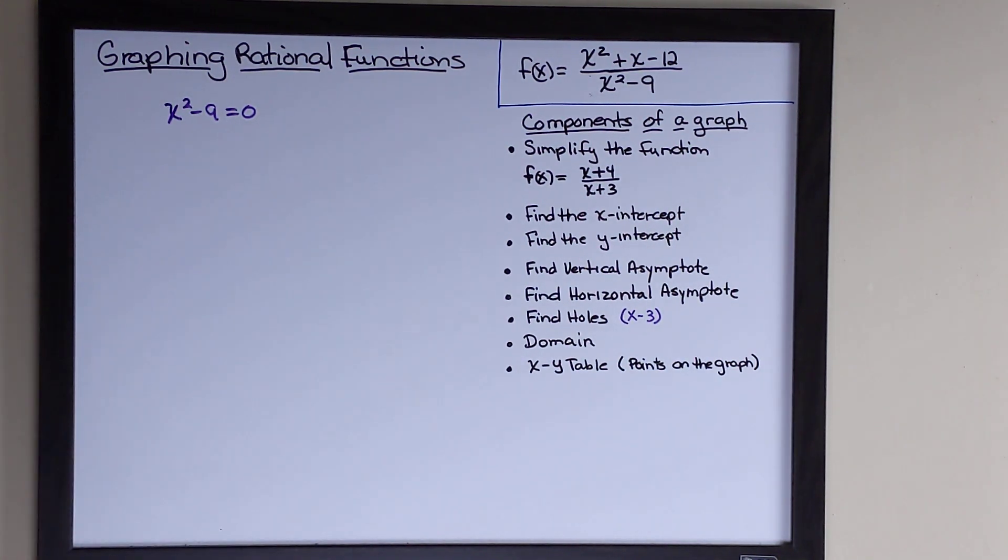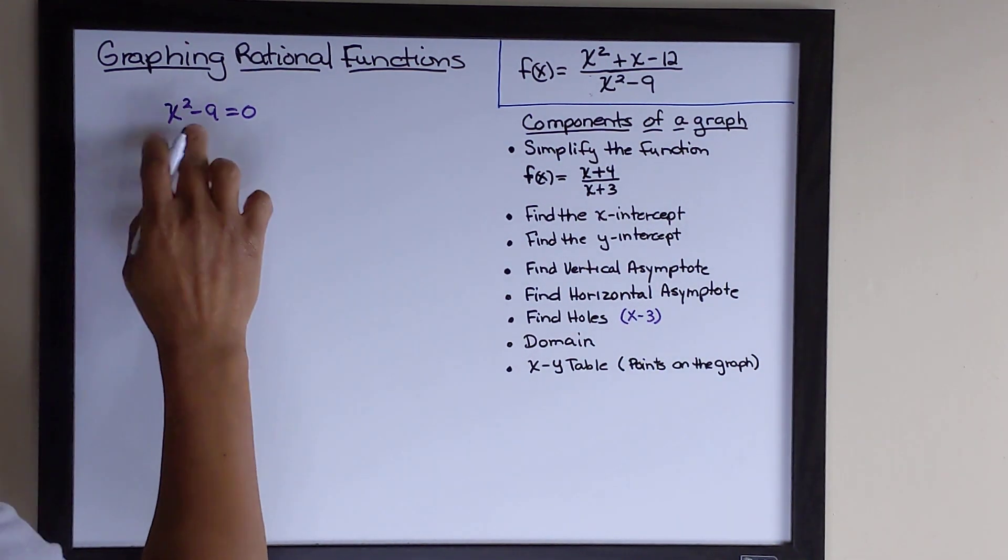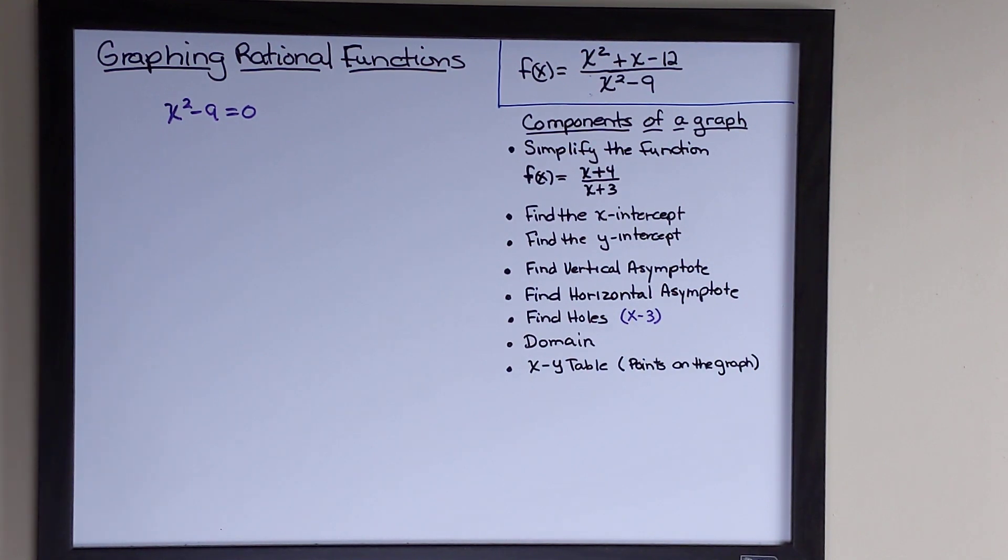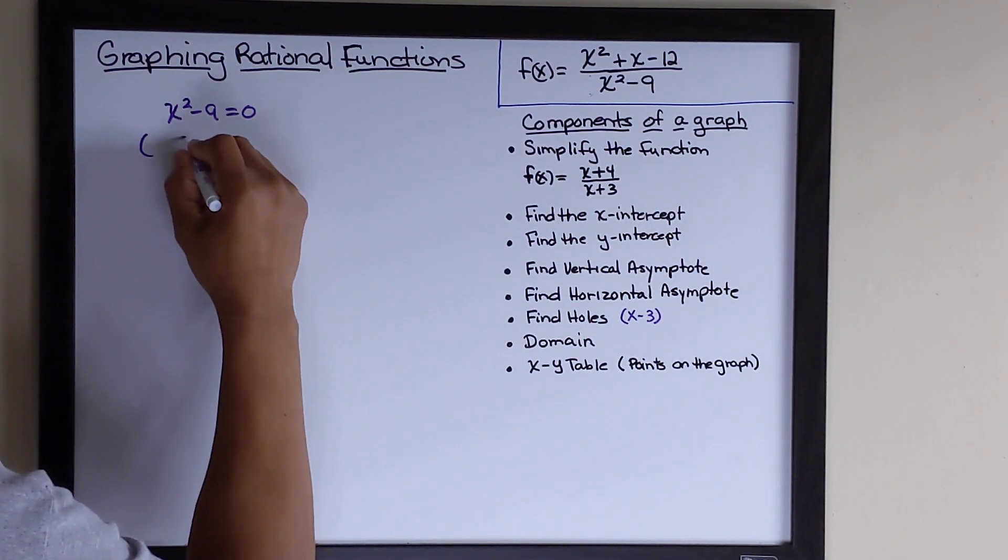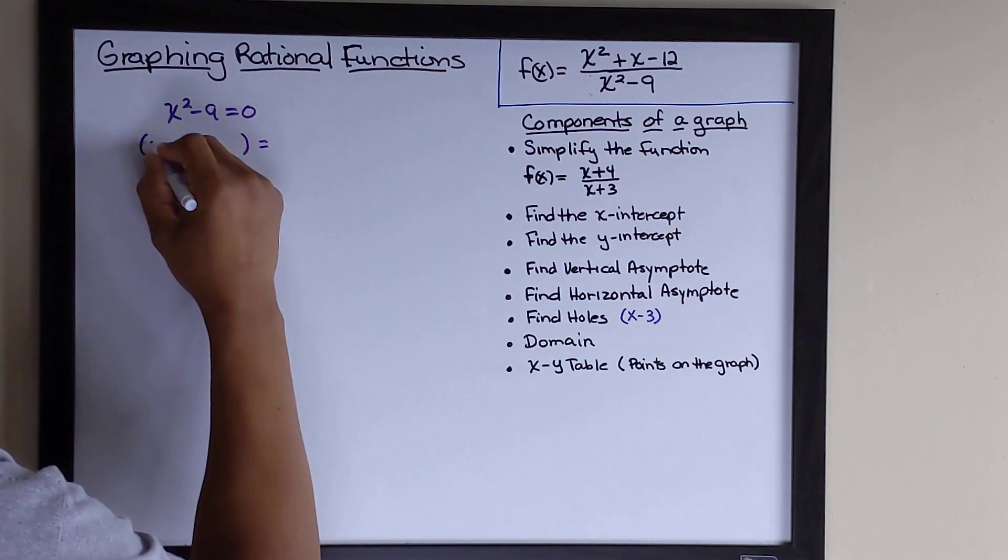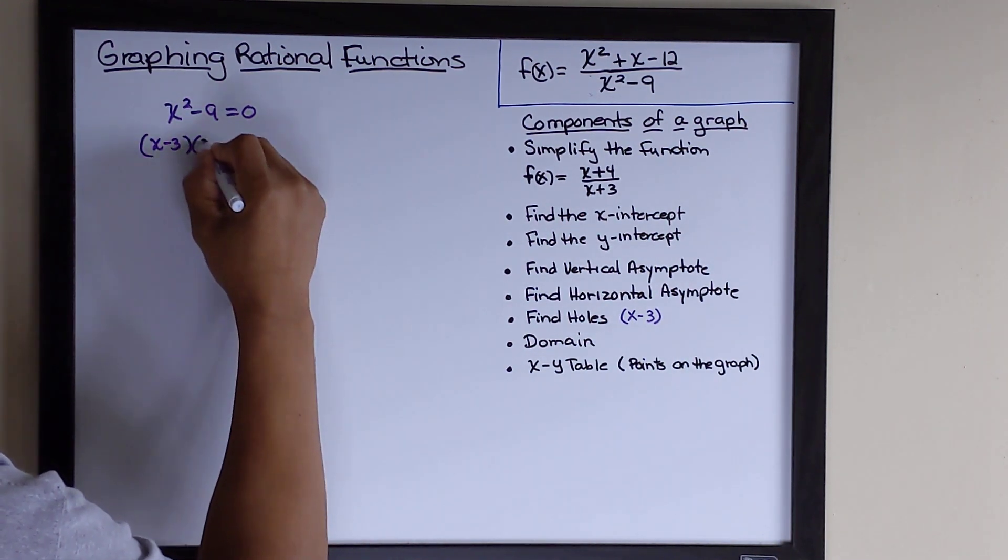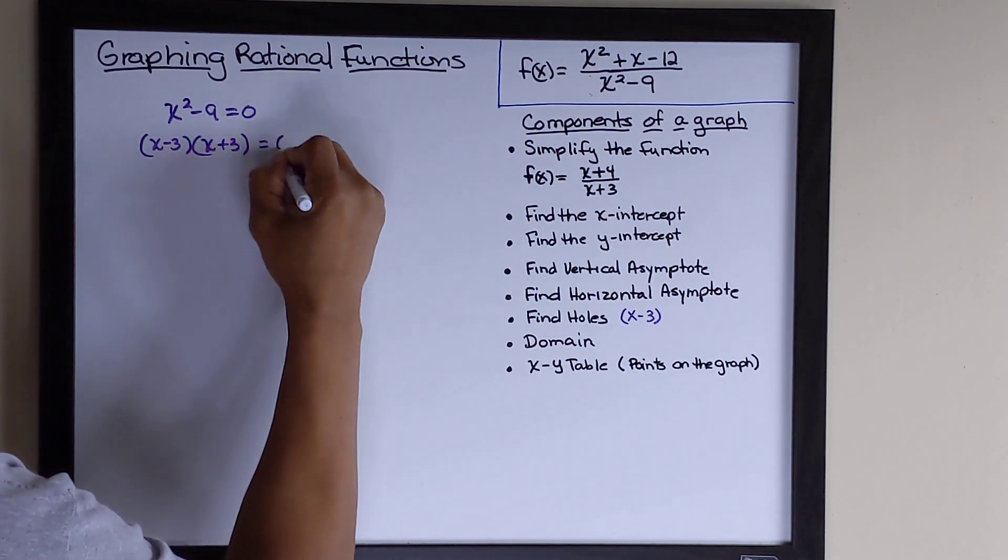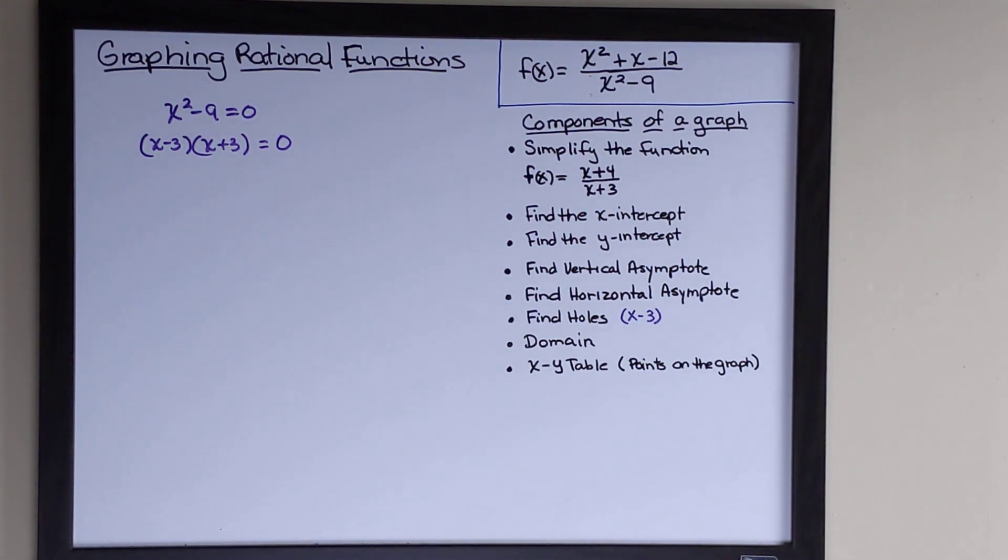Like that. And of course to solve for this, I would simply factor this using difference of squares factoring, and we'll get x minus 3, x plus 3 equals 0. Now that we've done that...